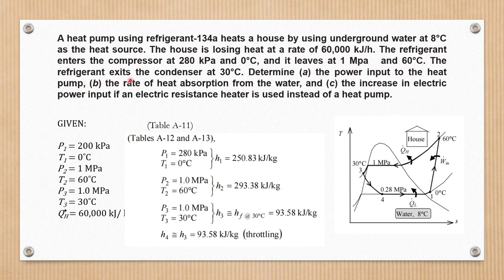The refrigerant exits the condenser at 30 degrees Celsius. Determine the power input to the heat pump, the rate of heat absorption from the water, and the increase in electric power input if an electric resistance heater is used instead of a heat pump.